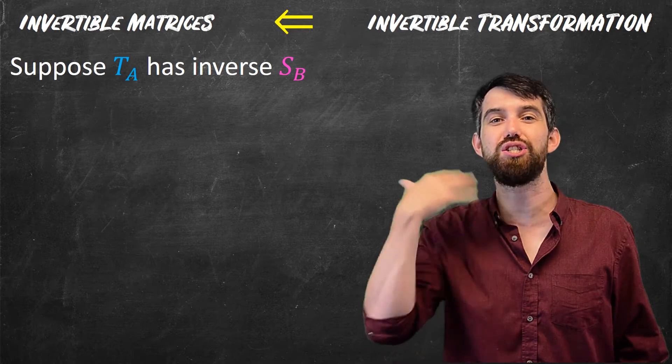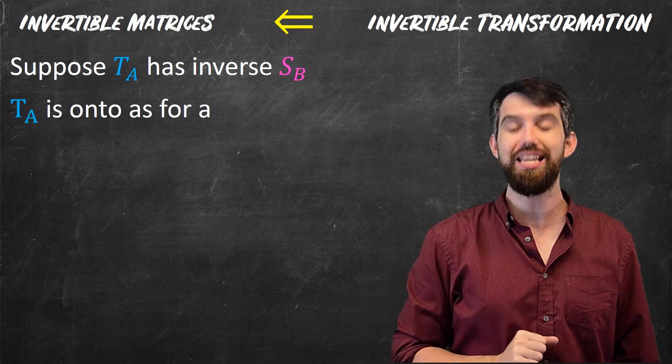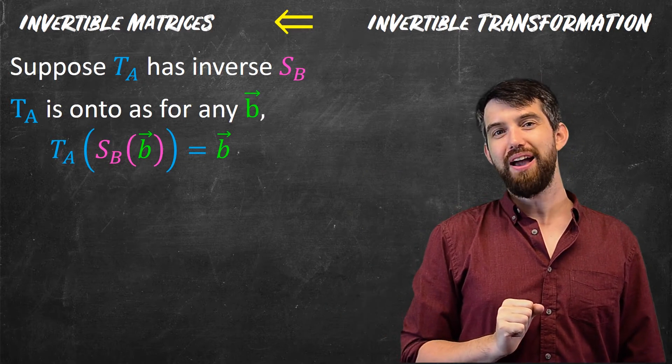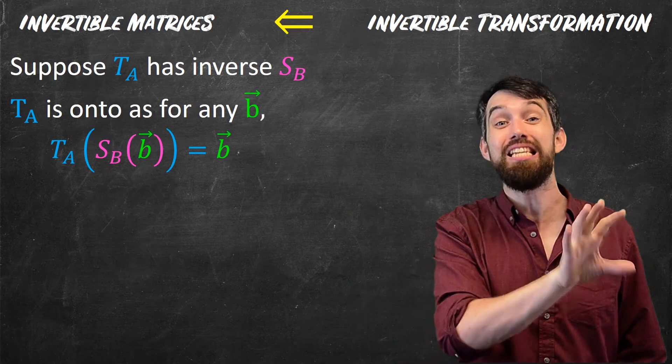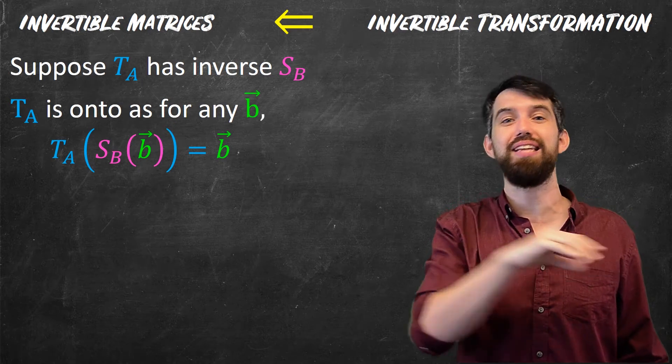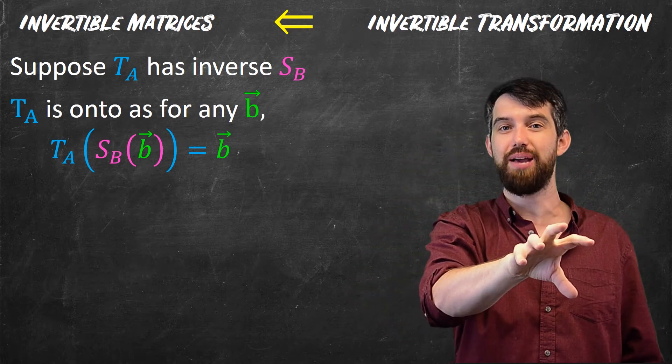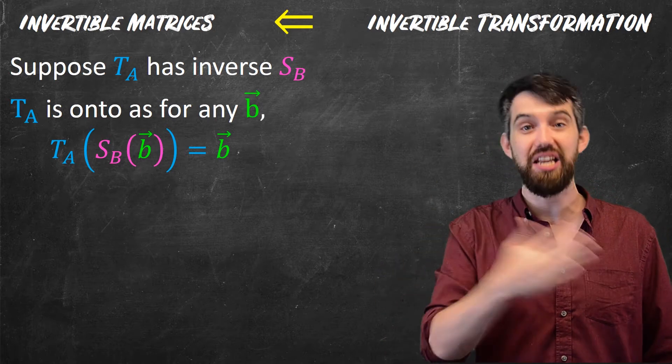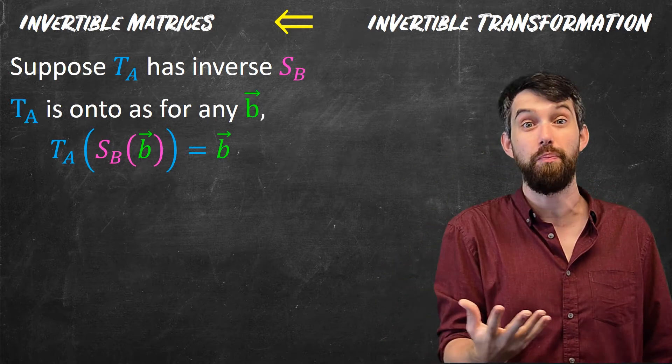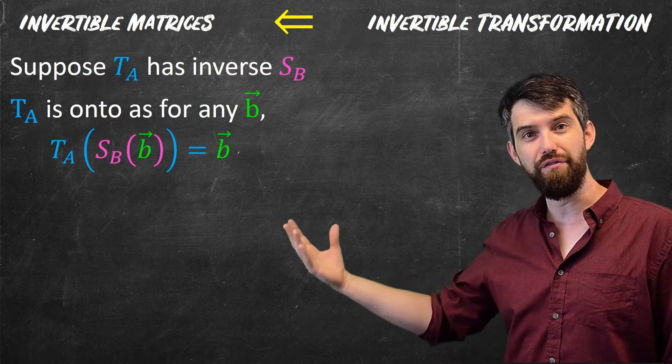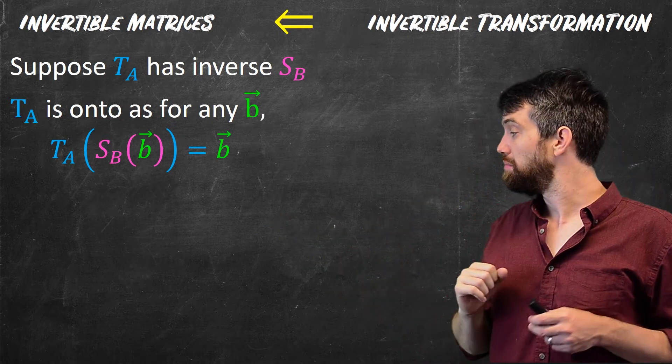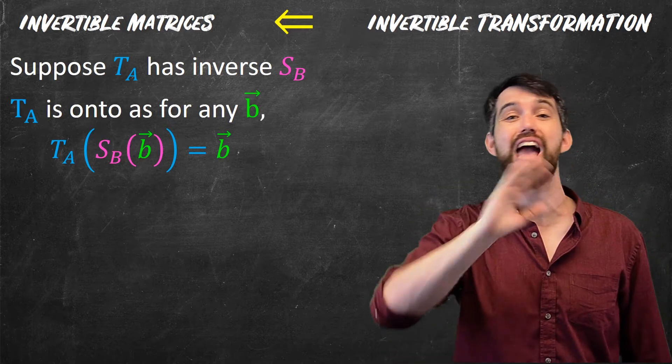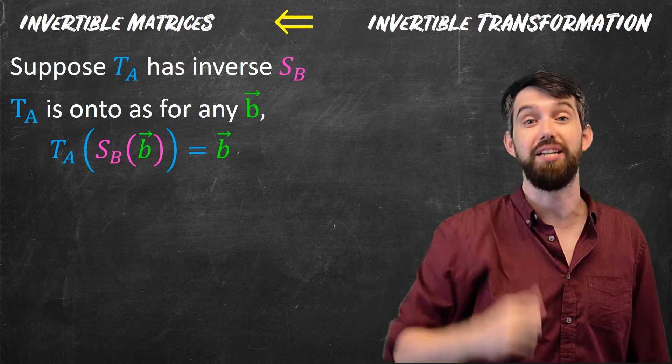But indeed, I can sort of construct a way. Let me choose some particular vector b. b is the thing I want to hit. Well, if I then apply my T transformation to the vector that is the S transformation times b, I get the composition. It's T of S of b, and because T and S are their inverses, it just gives me out b. So T of S of b does indeed hit the value b. So this thing is onto.